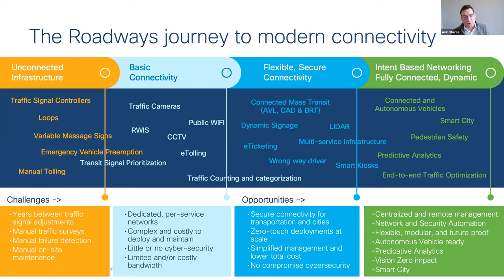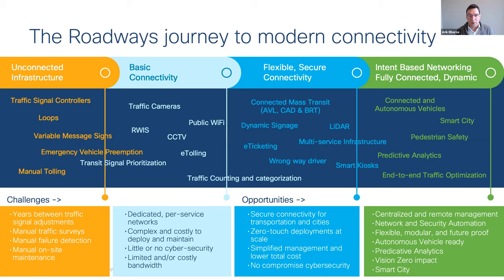One example I'd like to emphasize is the roadway journey to connectivity. Many roadways and intersections today are still unconnected. We're all familiar with being stuck at a traffic light late at night with no cars coming, wondering why you're there. Probably it's an unconnected intersection where the traffic lights are just doing their thing — on a fixed pattern — and it doesn't have much information, just executing a fixed algorithm for the lights.